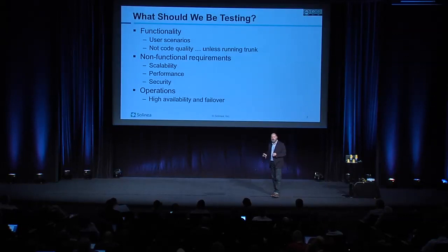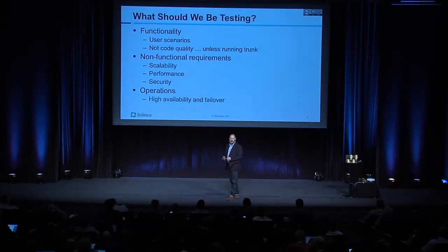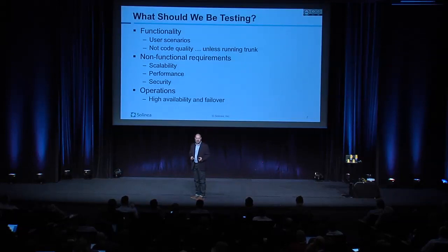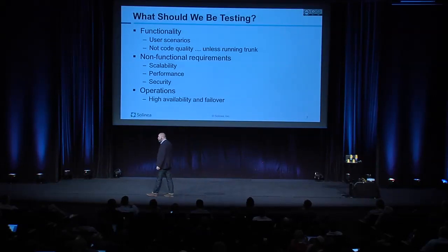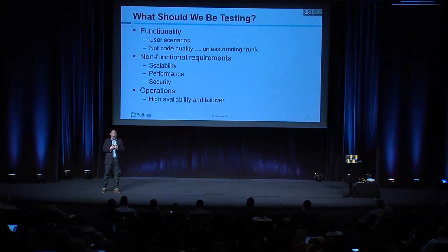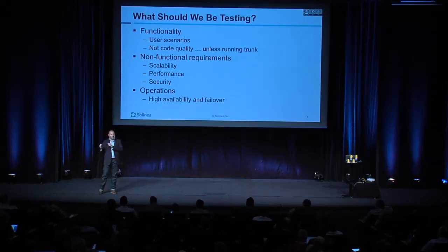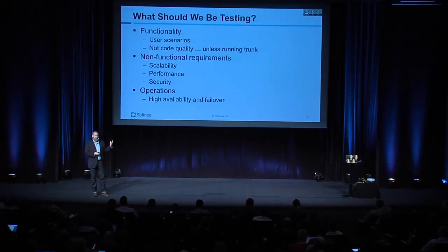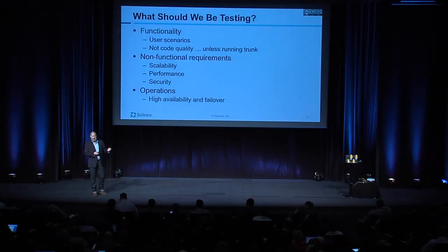Secondly, I'm not actually looking for bugs in the code. I'm not trying to test code quality; I am trying to test the deployment quality. If there actually is a bug in the code, operations isn't probably the team to fix that. While it's great that we could identify it, we're there to fix deployment problems. So while we will certainly look for code problems and make sure we're upstreaming those, we're not specifically testing the code — we're testing the implementation of the deployment.